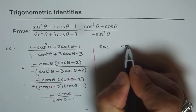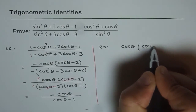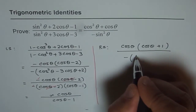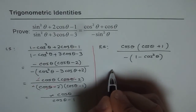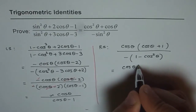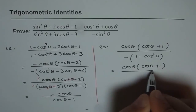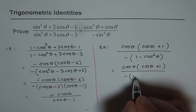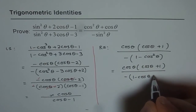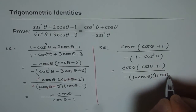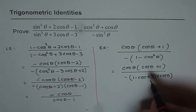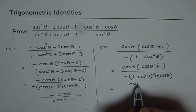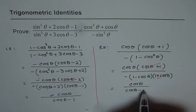On the right side we have cosθ as a common factor, so we get cosθ(cosθ + 1) and the denominator is −sin²θ. Sin²θ is 1 − cos²θ, so this becomes cosθ(cosθ + 1) over −(1 − cosθ)(1 + cosθ), using the difference of squares. Now we can cancel (cosθ + 1), and we are left with cosθ over cosθ − 1.